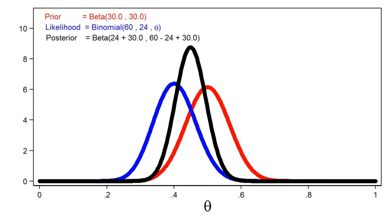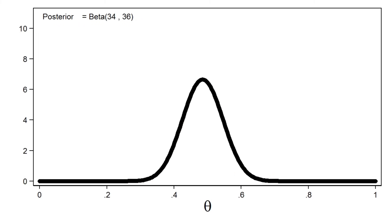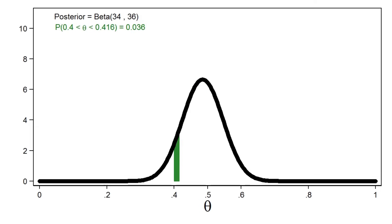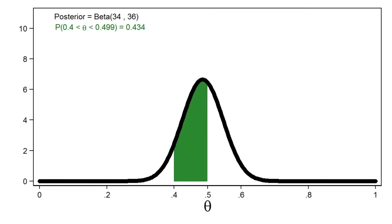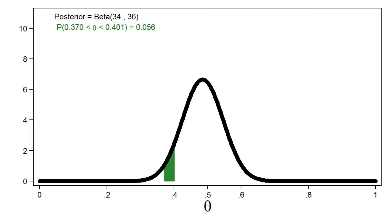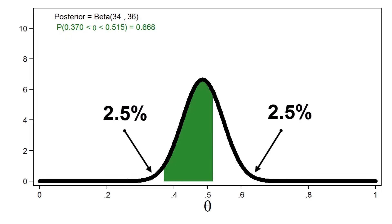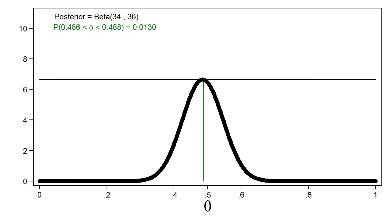In practice, this means that we can obtain precise estimates of the posterior distribution using smaller sample sizes when we use more informative priors, but similar precision may require a larger sample size when we use a weak or uninformative prior. We can use the posterior distribution to calculate various quantities — for example, the mean of the posterior distribution, or the median, or the mode. We can also calculate the probability that theta lies within an interval, such as 0.4 to 0.5.